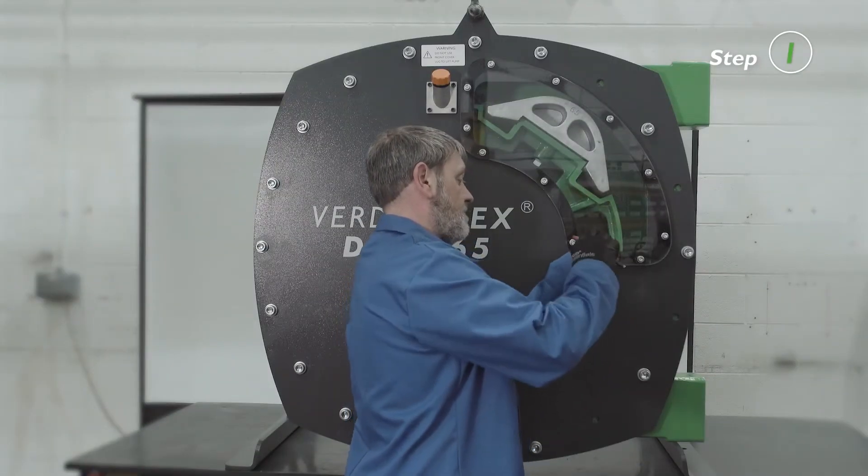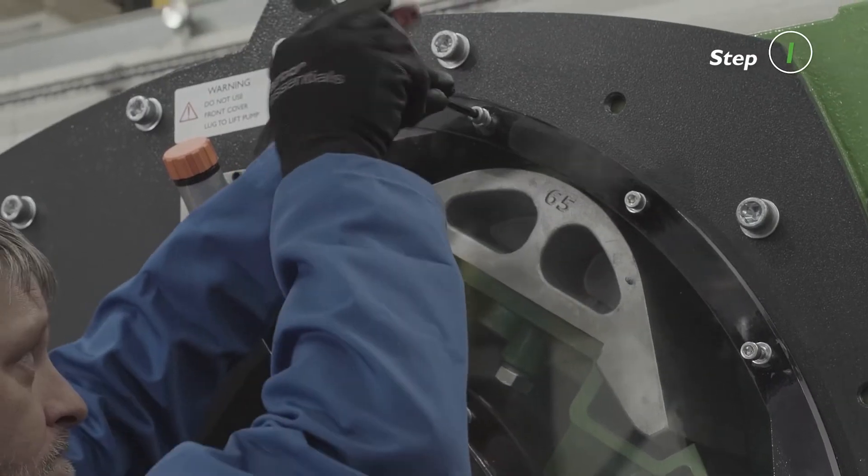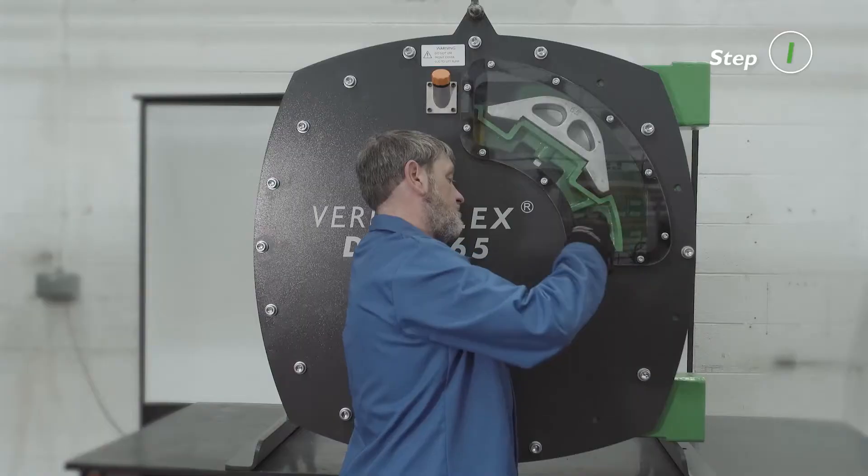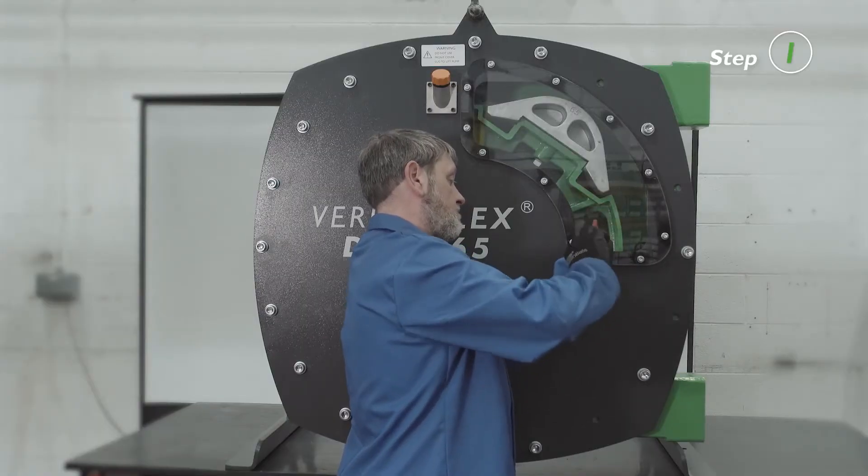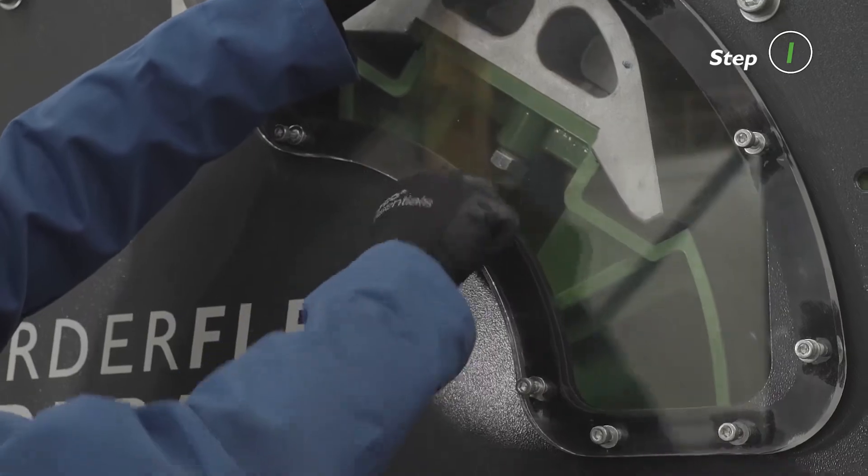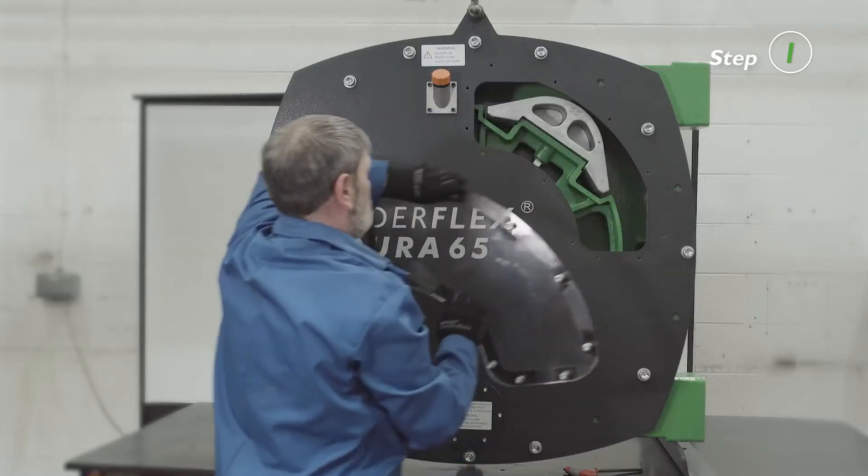Rotate the rotor so that a rotor shoe is visible through the inspection window. Remove the inspection window and gasket. Leave the bolts on the inspection window for reassembly.